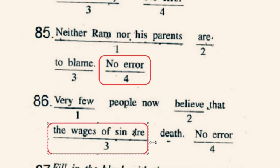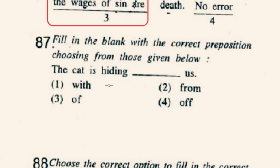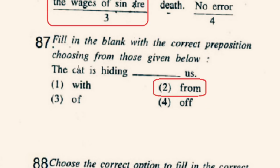Question number 87: Fill in the blank with the correct preposition — 'The cat is hiding ___ us.' The correct preposition will be 'from.' Option 2nd is correct: The cat is hiding from us.